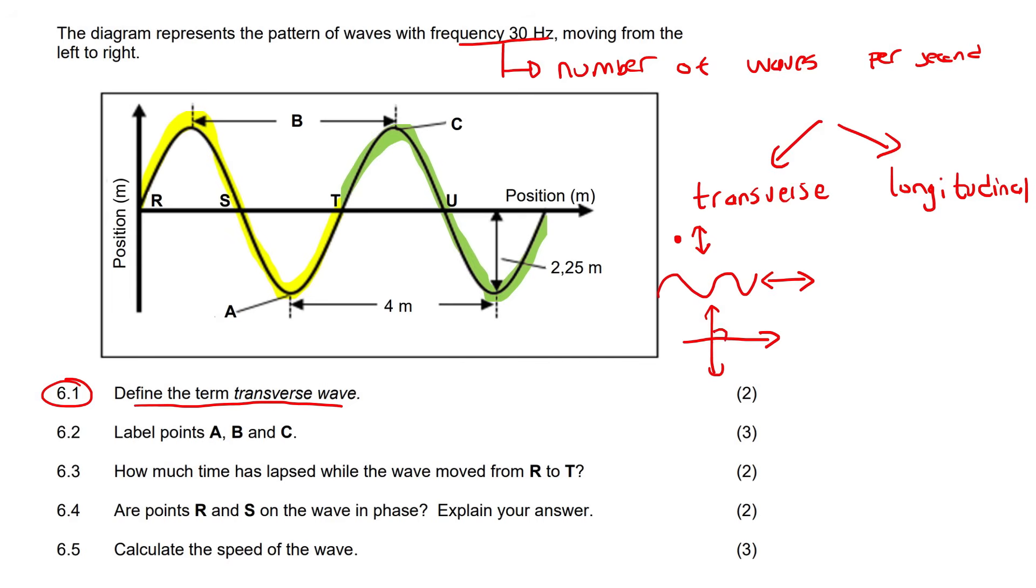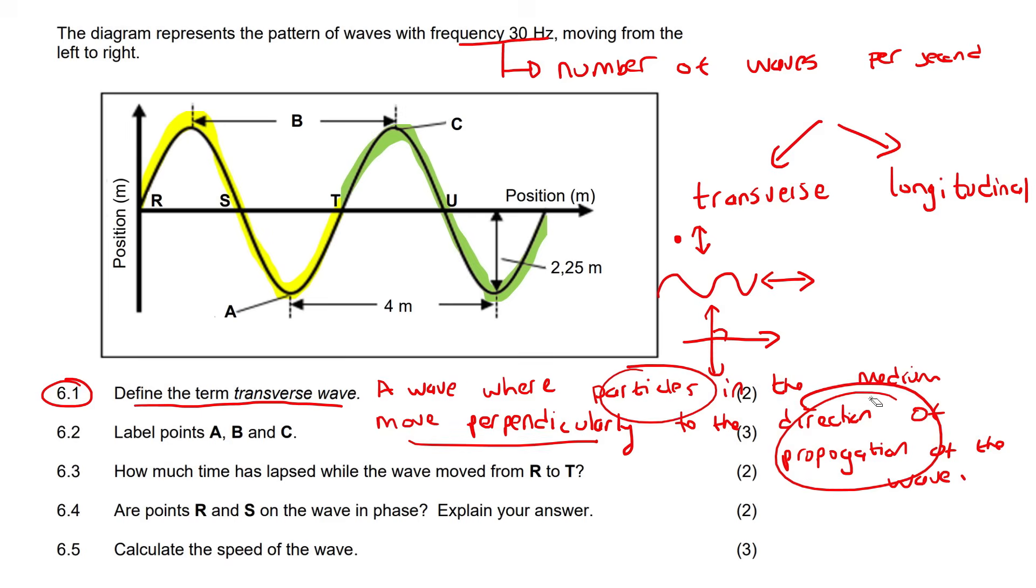The transverse wave is when the particle moves perpendicularly to the direction of the wave. So the definition is: a wave where particles in the medium move perpendicularly to the direction of propagation of the wave. We're just saying that it's where the particles move perpendicular to the direction of the wave.